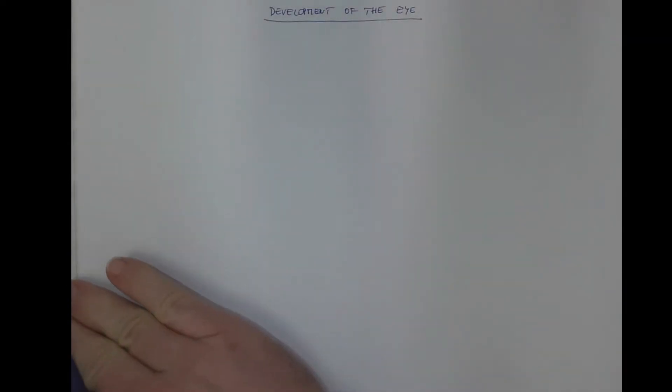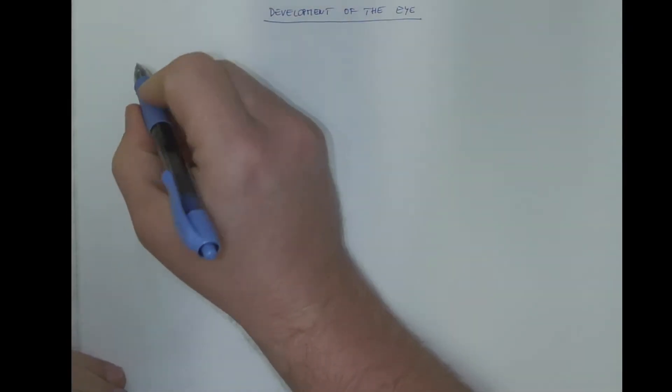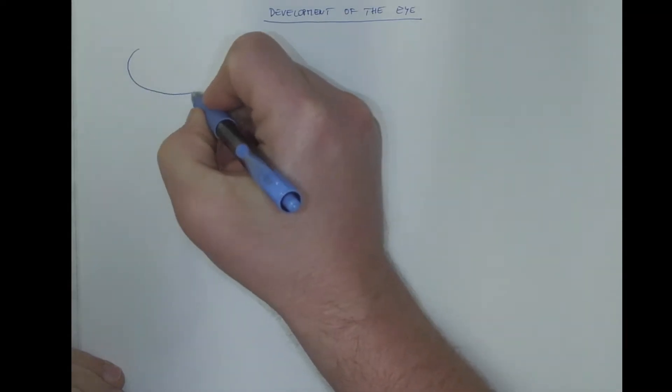Let us discuss how the eye develops. On a transversal section through the embryonic head in the fourth week...